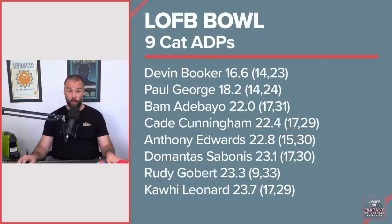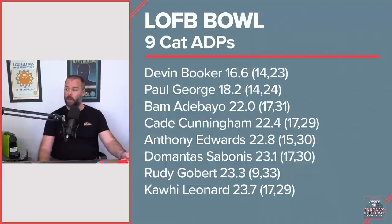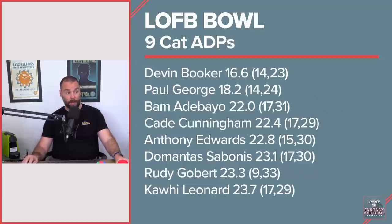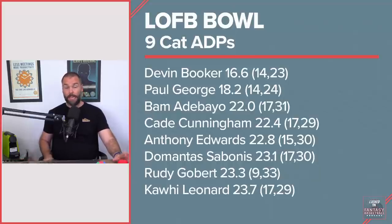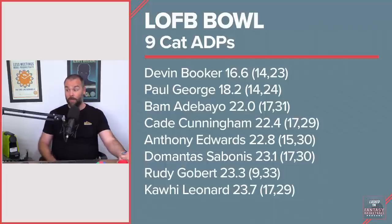Cade Cunningham had an ADP of 22.4 and Anthony Edwards 22.8. Edwards topped out at pick 15 whereas Cunningham didn't go any higher than 17. Cunningham fell to 29 in one draft and Edwards fell to 30. Rudy Gobert had an ADP of 23.3. He went as high as 9 in a league — someone definitely punting free throws who decided he's the 9th best player. That's a crazy pick; you could have taken somebody else at 9 and gotten him at 15 on the way back. He also fell to 33.